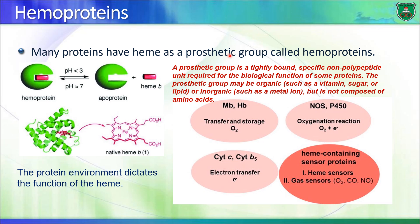The heme group is also known as a prosthetic group. A prosthetic group is a non-protein group that is bound tightly — covalently — to a protein. This prosthetic group can be organic, like vitamins, sugars, lipids, or heme, or it can be inorganic, such as metals. They are not composed of amino acids and they are tightly, covalently bound.